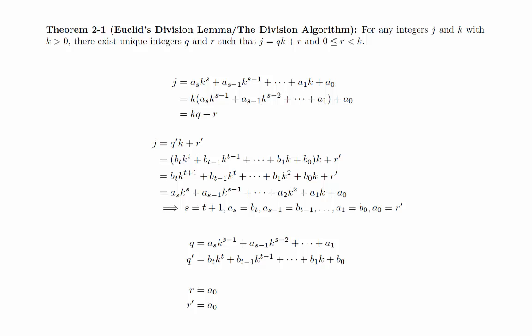The j equals 0 and j less than 0 cases will be left as exercises. When j equals 0, you can easily identify q and r. When j is negative, you will want to apply the division algorithm to the value negative j, which will be positive, and so you can apply the conclusion of the proof we just completed.